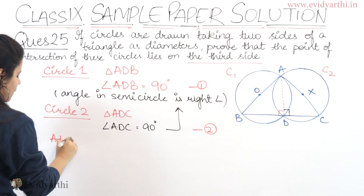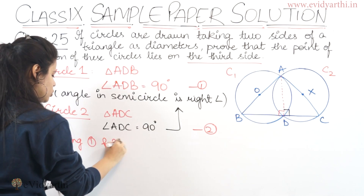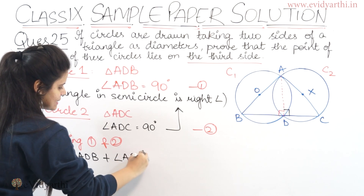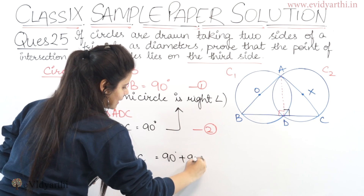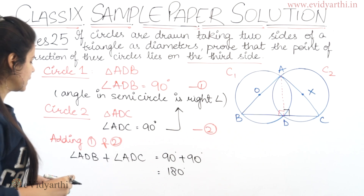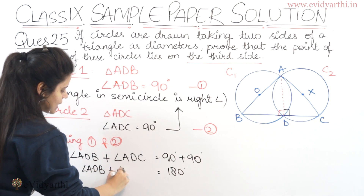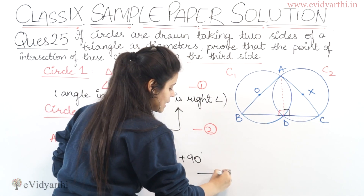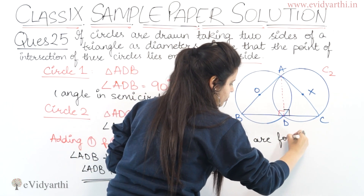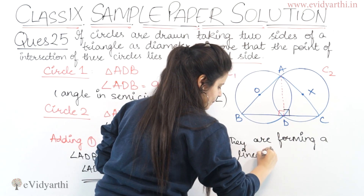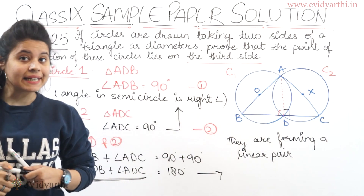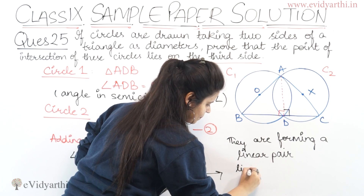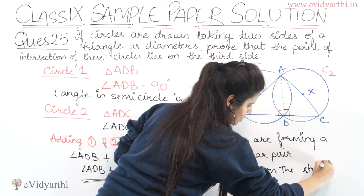Now adding equations 1 and 2: angle ADB plus angle ADC equals 90 degrees plus 90 degrees, which gives 180 degrees. If we add two angles whose sum is 180 degrees, it means they are forming a linear pair, which means these two angles are lying on a straight line.